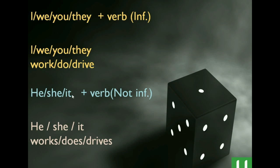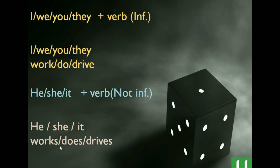He, she, it. But what if the subject changes from I, we, you, they to he, she, it? Yes, the verb is not going to be infinitive anymore, because it's going to have S, or ES, or IES. So: he works, she works, it works, she does, he does, and so on.